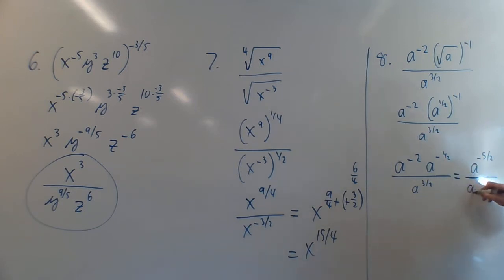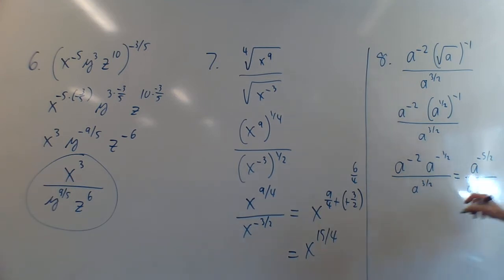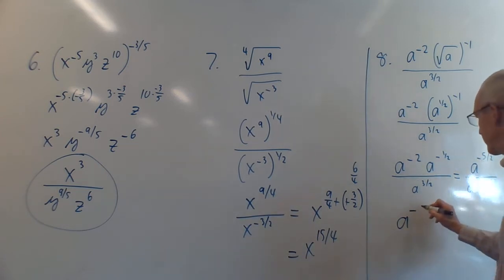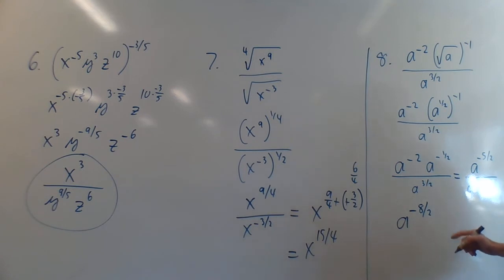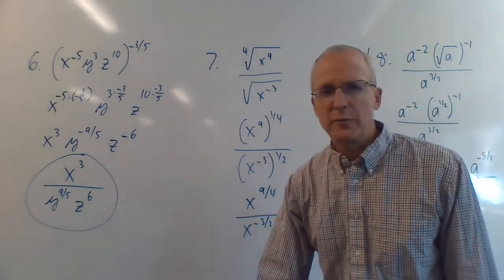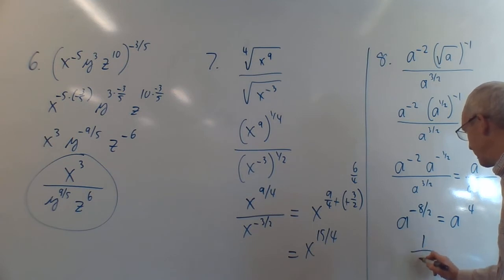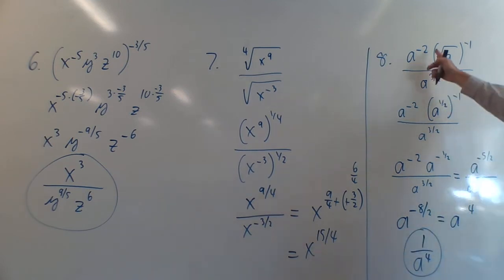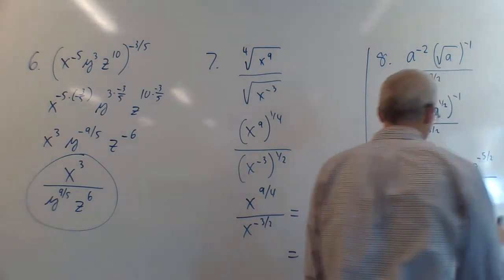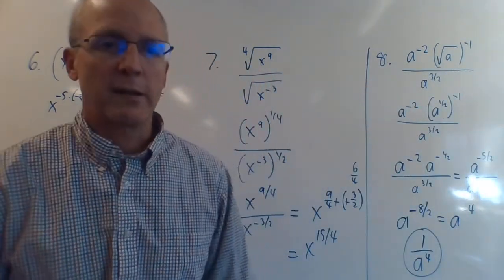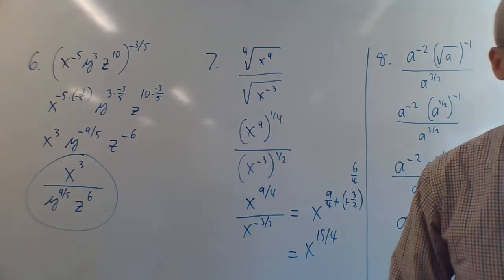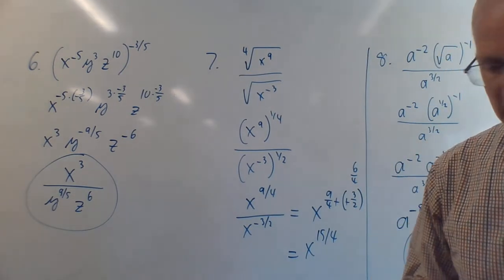So we get a^(-4), which simplifies to 1/a⁴. That whole messy expression is just 1/a⁴. On a test I'd write it as 1/a⁴ rather than a^(-4), since positive exponents are cleaner.